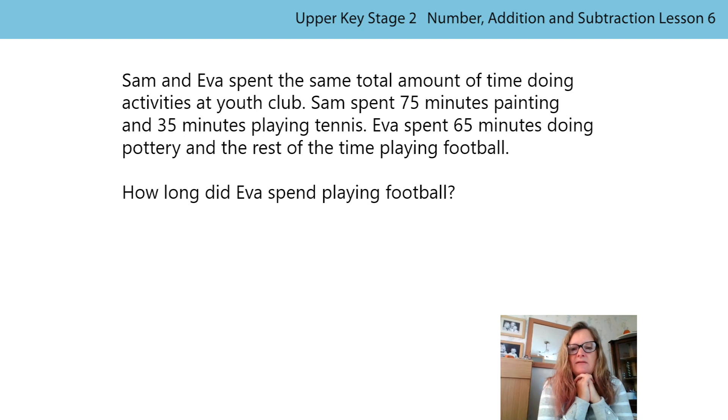Sam and Eva spent the same total amount of time doing activities at a youth club, so that's the key. The same total amount of time. That means Sam and Eva, if they were on balancing scales, the amount of time, it's got to be balanced. Sam spent 75 minutes painting and 35 minutes playing tennis, so those are your numbers for his side of the balance. Eva spent 65 minutes doing pottery and the rest of the time playing football. This must be our missing box, the rest of the time.